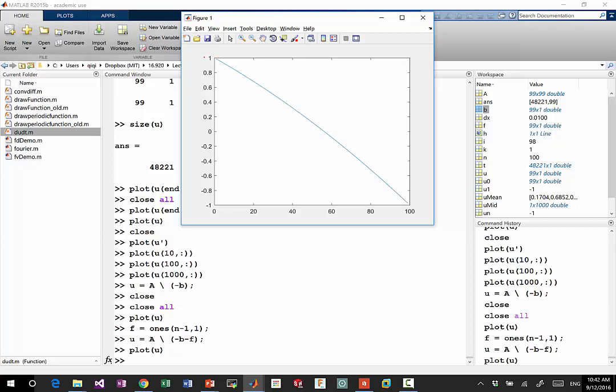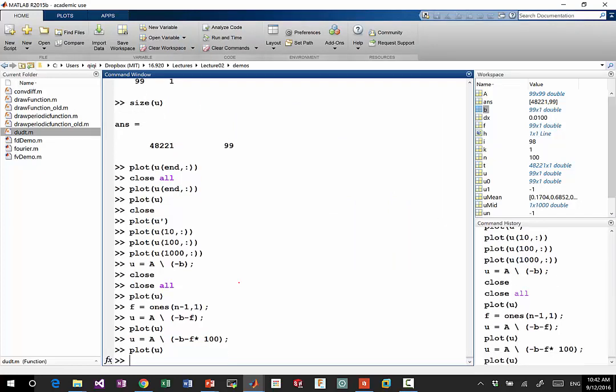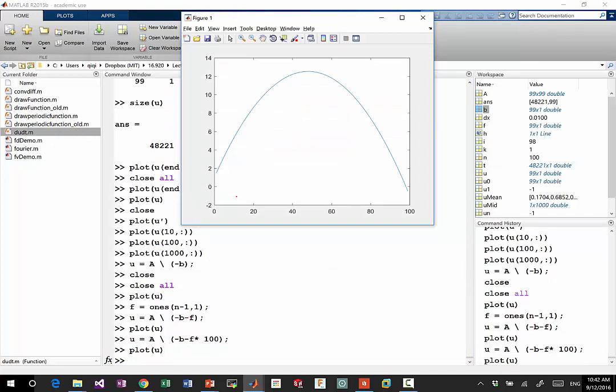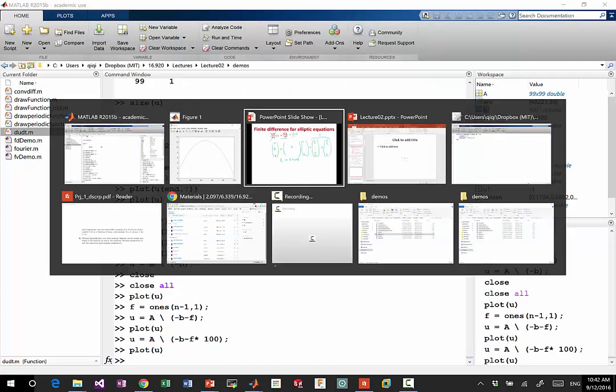So the second-order derivative plus one is equal to zero, which makes the second-order derivative negative, right? Which makes the line go that way. So that's what we should get. And if you increase F by 100, you get something a lot more curvy. So that's solving elliptic equations.